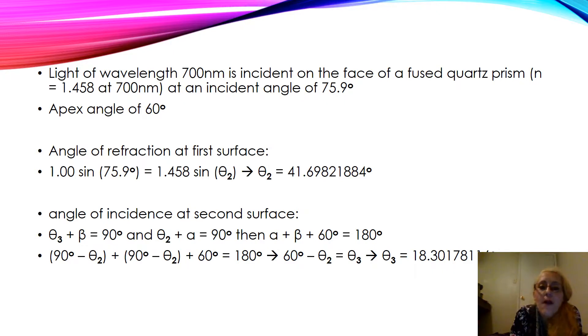Angle of refraction at the first surface: 1 sine 75.9 degrees equals 1.458 sine theta 2. So theta 2 equals 41.69821884 degrees.